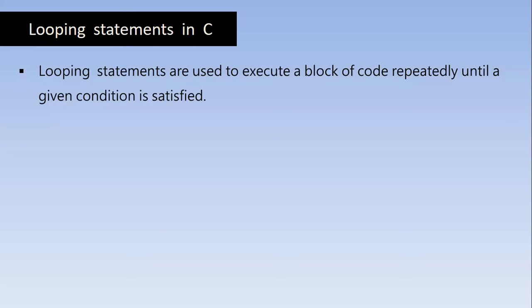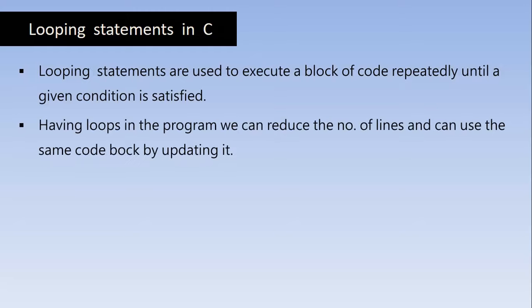Looping statements are used to execute a block of code or a piece of code repeatedly until a given condition is satisfied. Having loops in the program, we can reduce the number of lines and can reuse the same code block by updating it. Loops are very helpful in C programming — they save time, reduce file size, and can do a lot more.